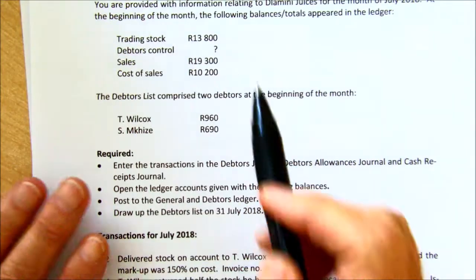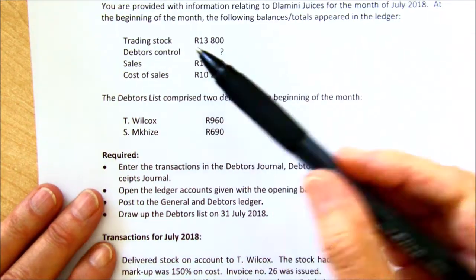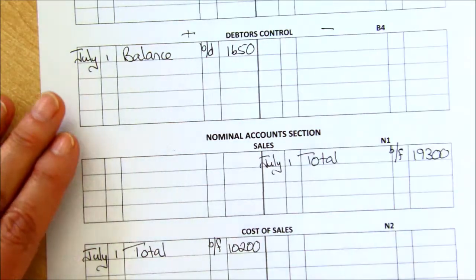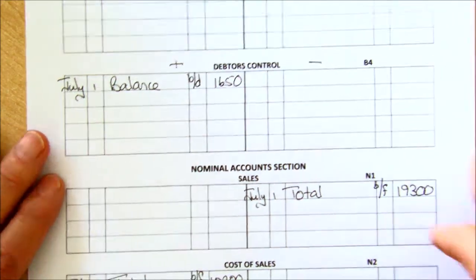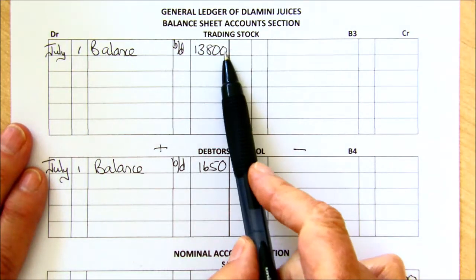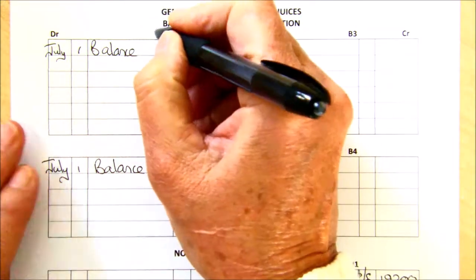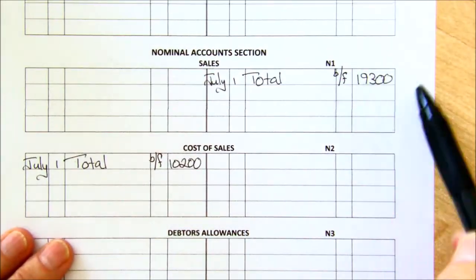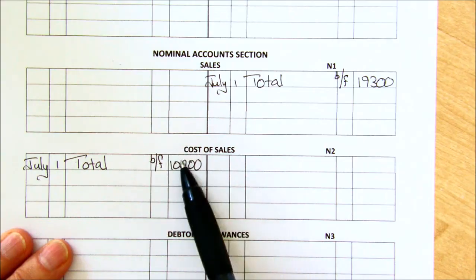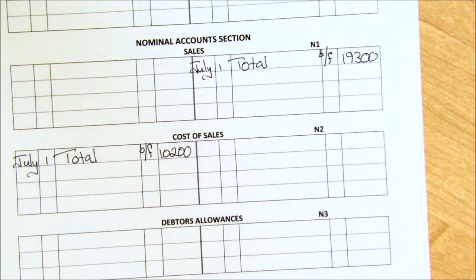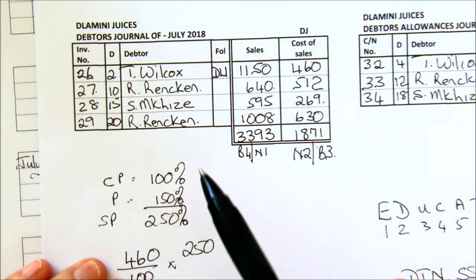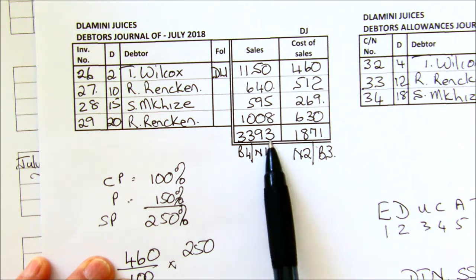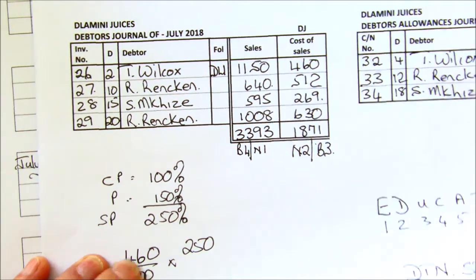If you look back on the exercise, they didn't give us the debtors' control — so it is made up of these individuals. Now let's start posting into the ledger, and I'm going to start with the general ledger. Besides your debtors' control, you were given trading stock with an opening balance. This being an asset account, it will have a debit balance. You've got sales, which has got a credit total, and cost of sales, which has got a debit total. Now let's look at the new journals — first, the debtors' journal. Our debtors owe us an amount of 3393 — that's for sales of goods.